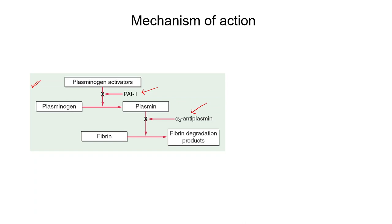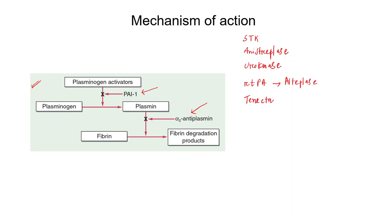The drugs we have as fibrinolytic agents include streptokinase, then there is an acylated plasminogen streptokinase activator complex known as anistreplase, then we have urokinase, then we have recombinant tissue plasminogen activators — alteplase — and certain derivatives of recombinant tissue plasminogen activator: tenecteplase and reteplase.